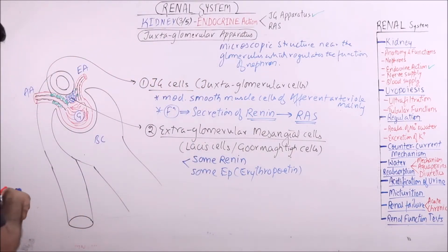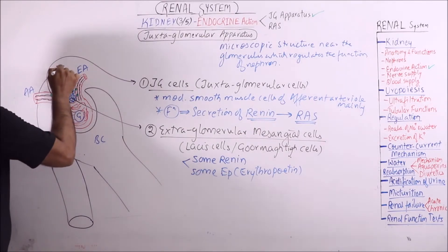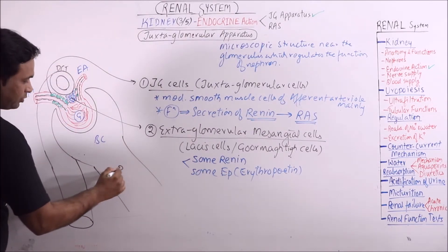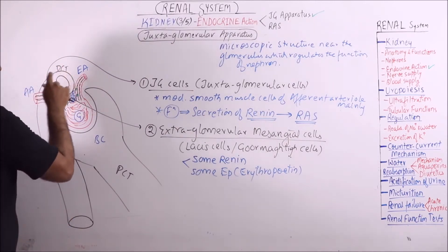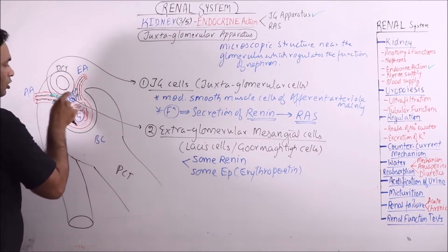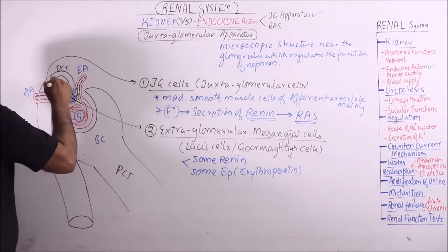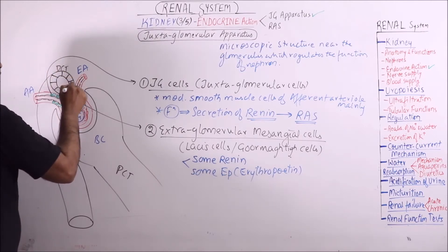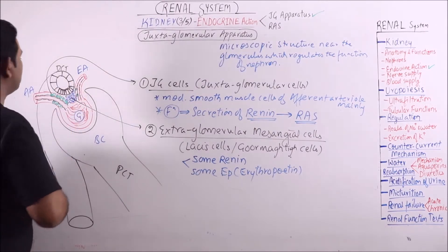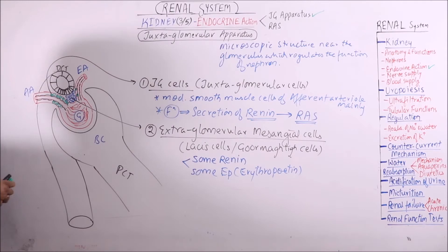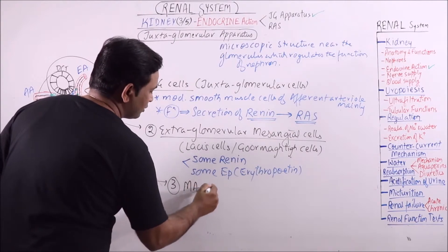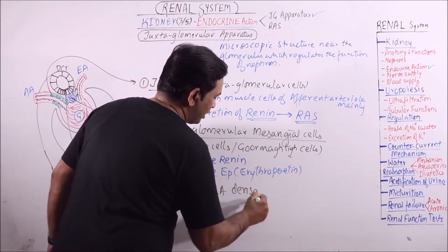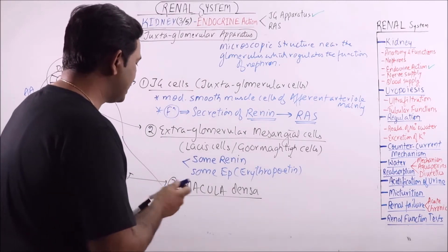Now third component. This is DCT and this was PCT and loop of Henle will be there when it will return as DCT. And when DCT is crossing the vascular pole or it is near to glomerulus then usually the cells of DCT are cuboidal type. But here compactly arranged mass of cells is there which is known as macula densa. So this is the third component that is macula densa.